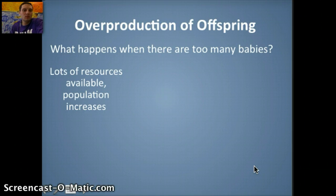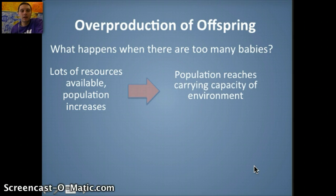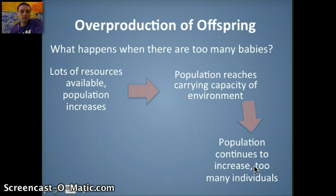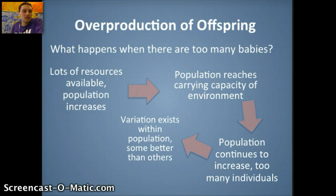So what happens when there are too many offspring? If there are lots of resources available — food, space, mates, shelter — the population is going to increase. The population will eventually reach its carrying capacity, meaning it gets to a size the environment can only support given the availability of resources. As the population continues to increase beyond carrying capacity, because variation exists, some individuals within that species are going to be able to survive better than others.